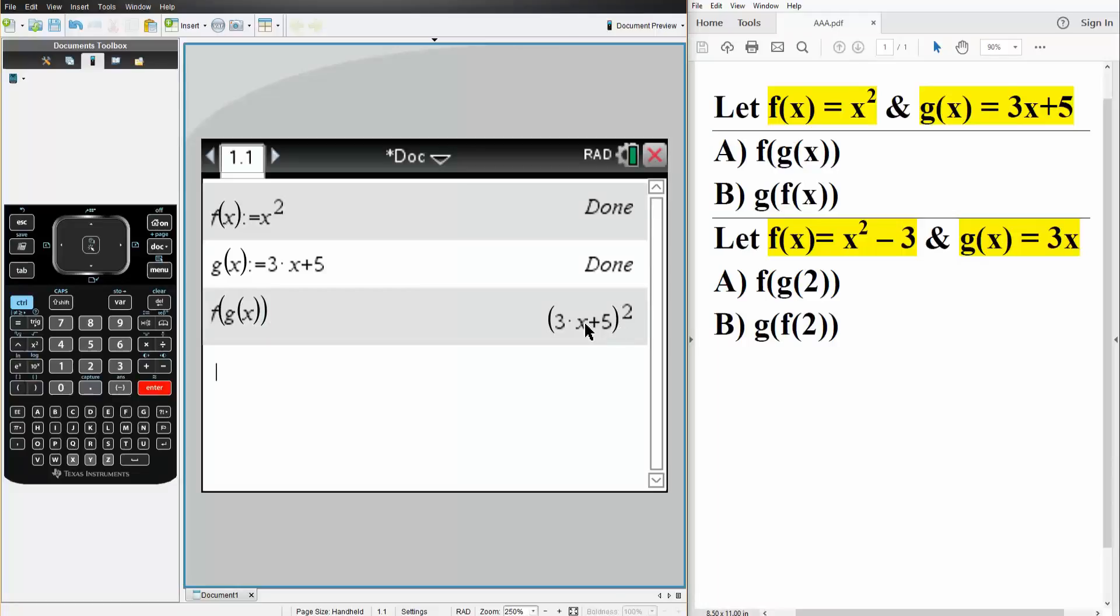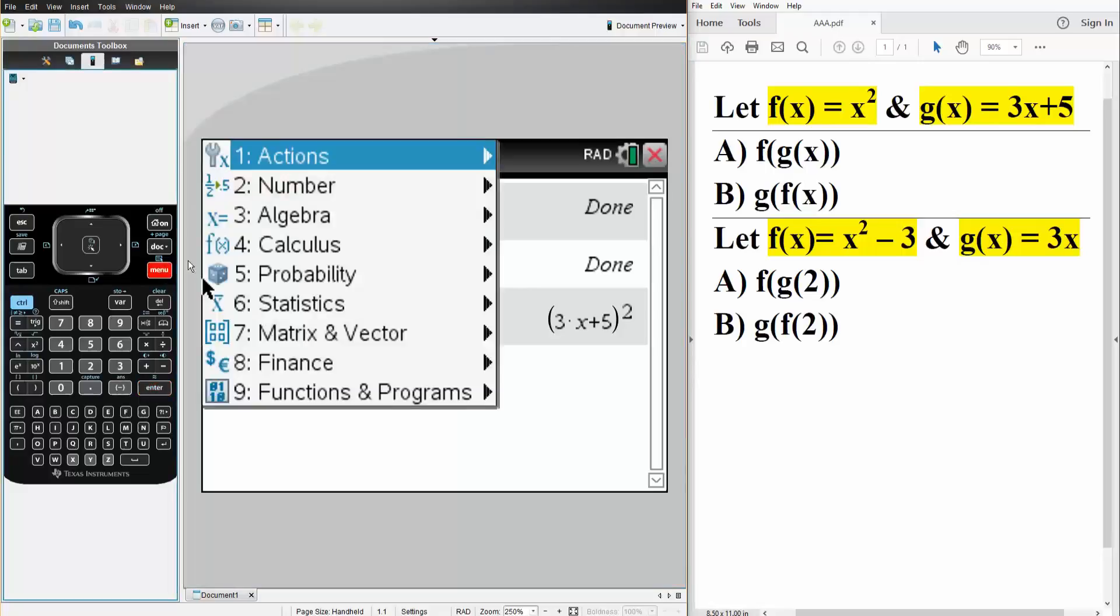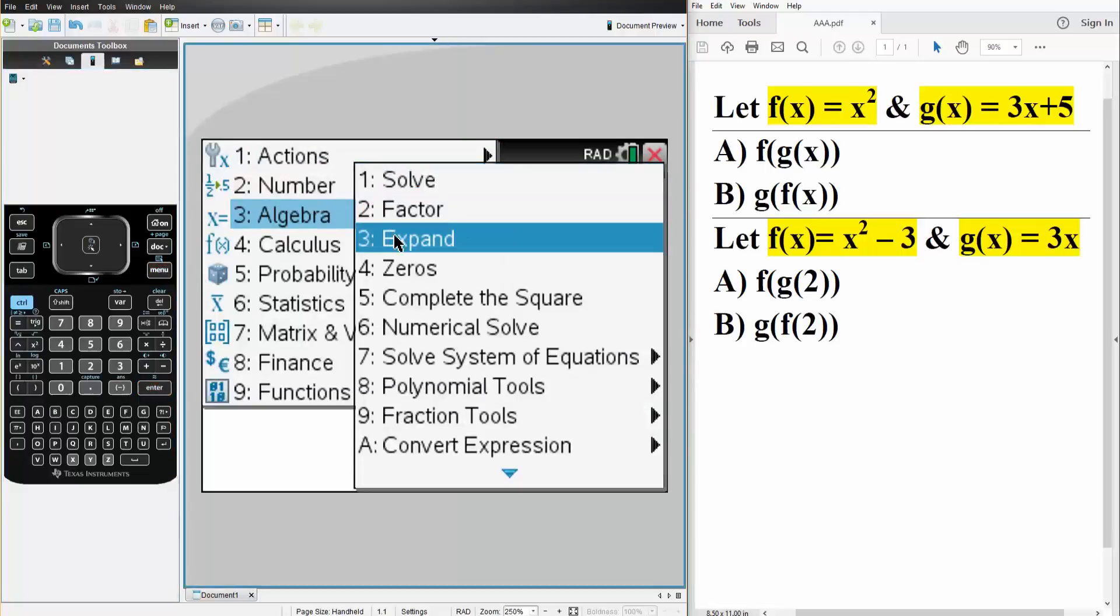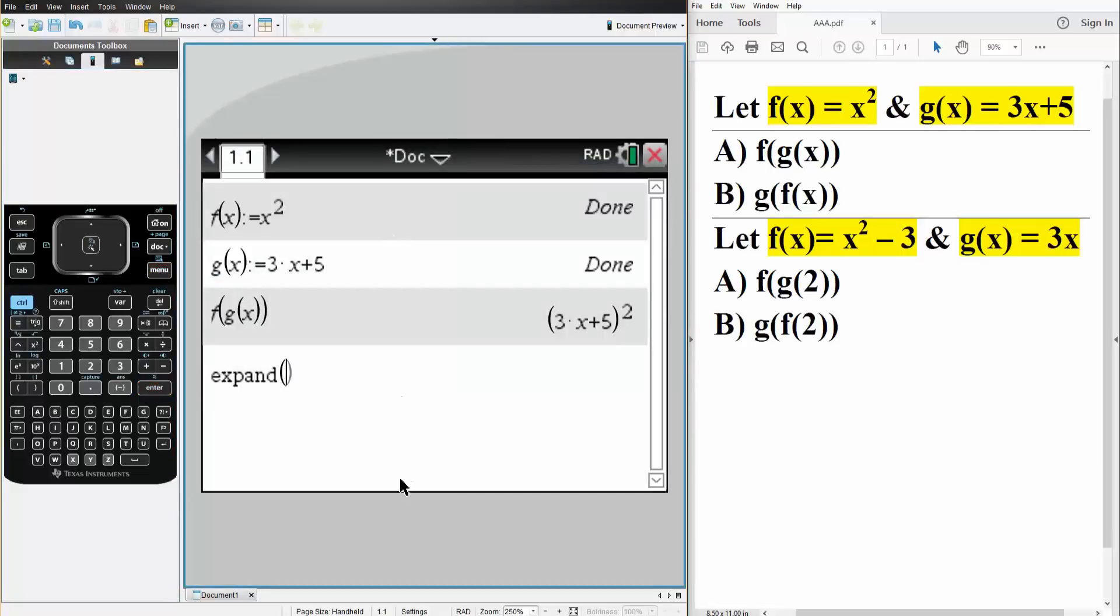And when we solve this question by hand, we had it expanded. So we can do that here too. Menu, Algebra, we hit 3, Expand. And we want to expand this answer. And so that would be 9x squared plus 30x plus 25.